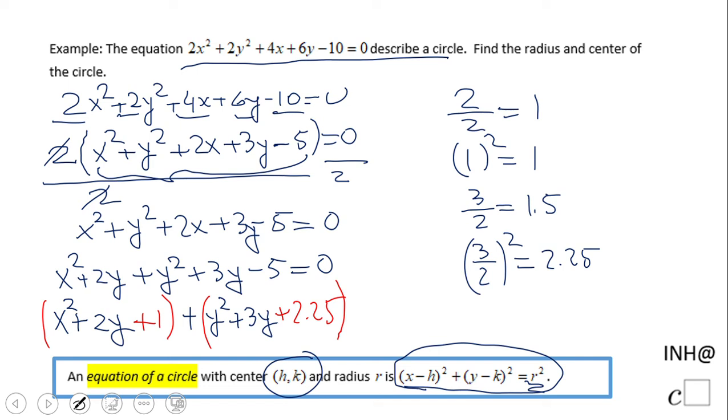Well, we added a 1 and a 2.25, so probably we need to subtract them, right? Because they were not there.